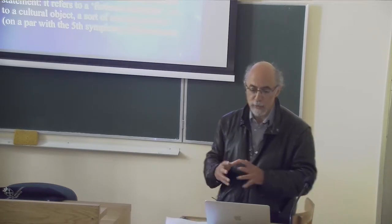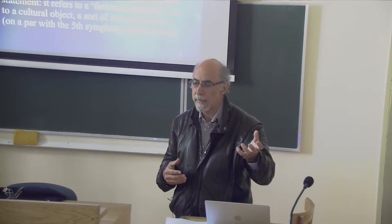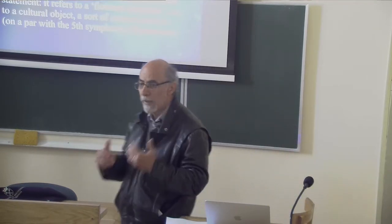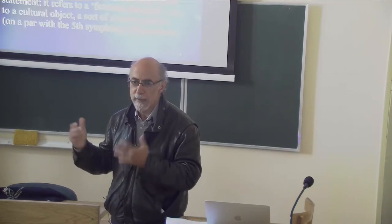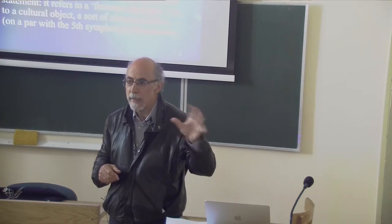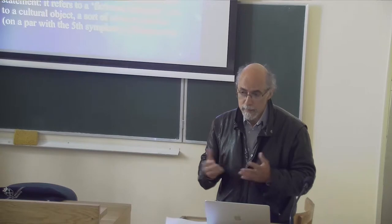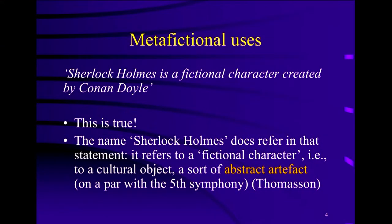When we say 'Sherlock Holmes is a fictional character created by Conan Doyle,' what we say is true, so it seems we must succeed in referring to something when we use the name Sherlock Holmes. Because if we didn't manage to actually refer to something, how could the statement be true? But what we are referring to must be something that exists — unlike in the fictional use, where it's pretense and we're not really referring. I believe we should take the statement at face value: when we say Sherlock Holmes here, we are referring to something created by Conan Doyle — a fictional character created by Conan Doyle.